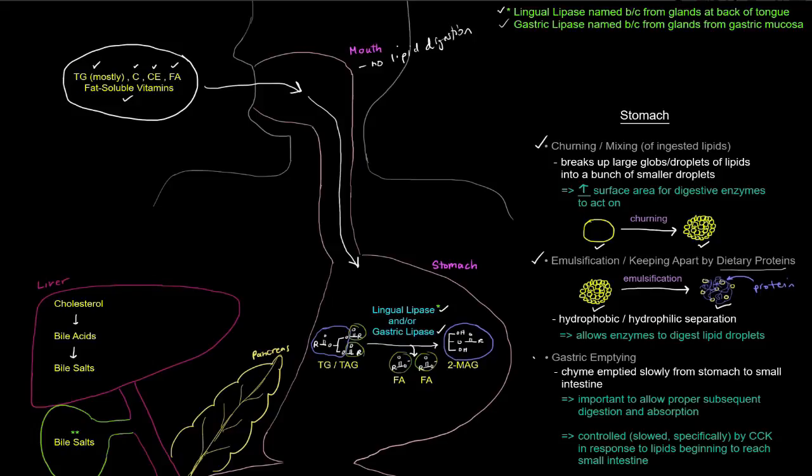Also, there's this idea of gastric emptying. So some of those digested contents are going to flow with the chyme into the small intestine. And that's going to be done slowly from the stomach to the small intestine. And that's important to allow proper subsequent digestion and absorption in the small intestine.